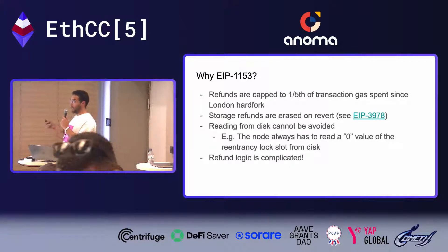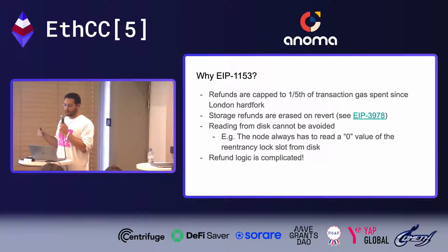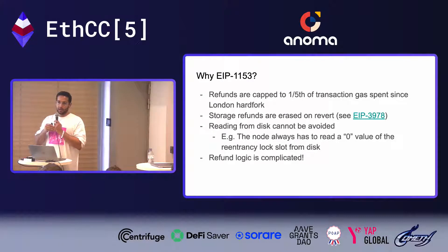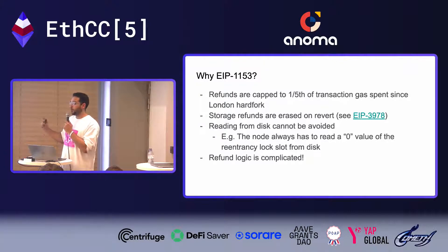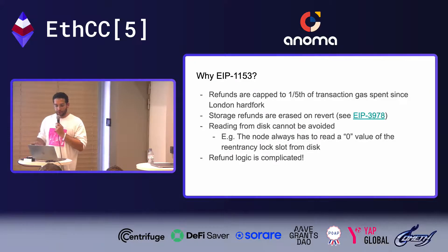Transient storage is already in the EVM, so why do we need an EIP? The biggest issue is that refunds are now capped as of the London hard fork to 20% of all gas used in a transaction. If you exceed that cap, you pay 20k gas for something that never writes to storage — it's really just 32 bytes of memory, far more expensive than MSTORE and MLOAD. This was done because of gas token and block size scalability concerns.